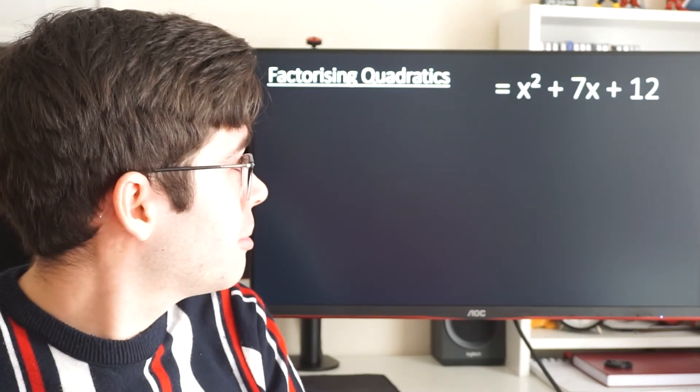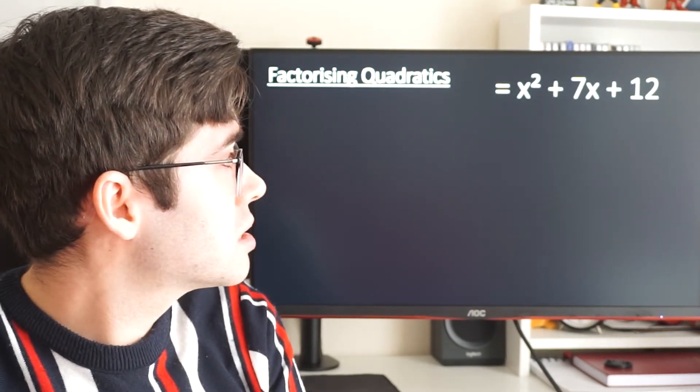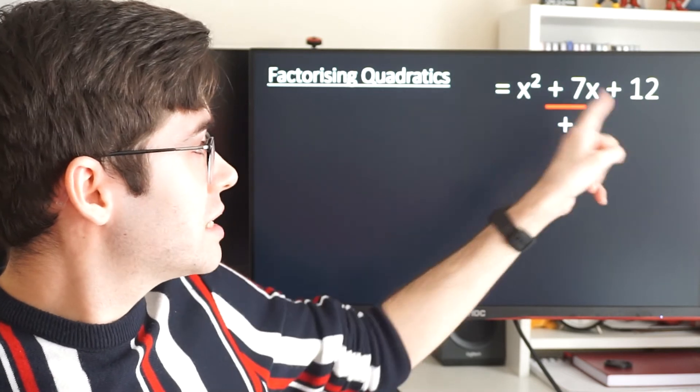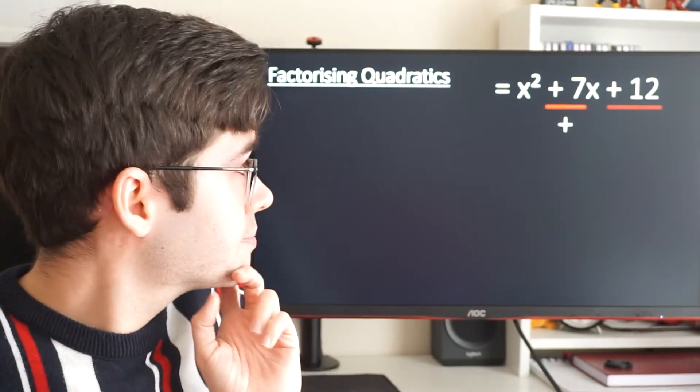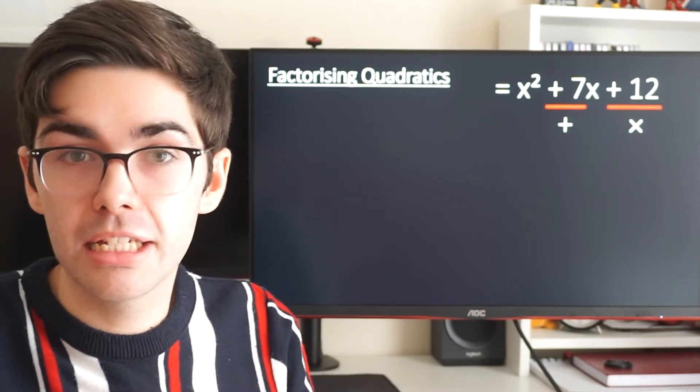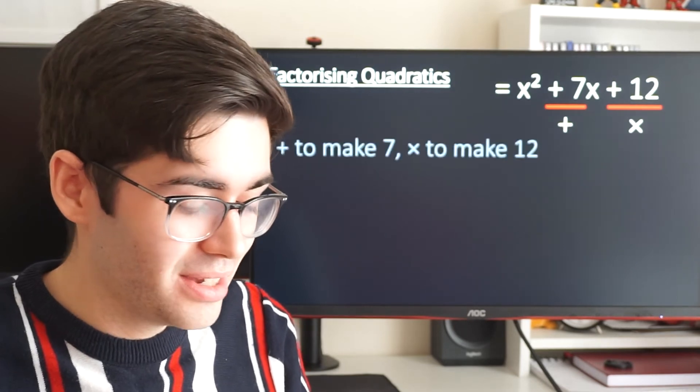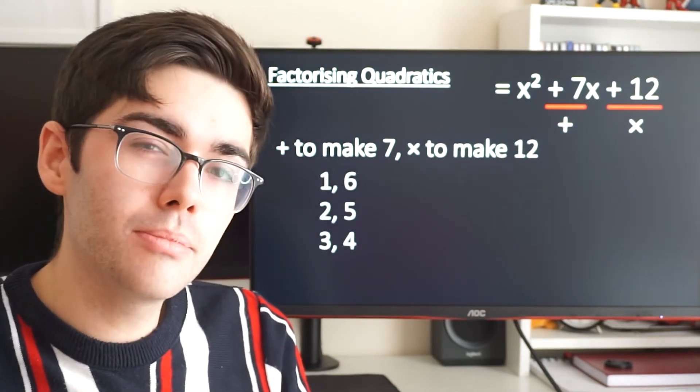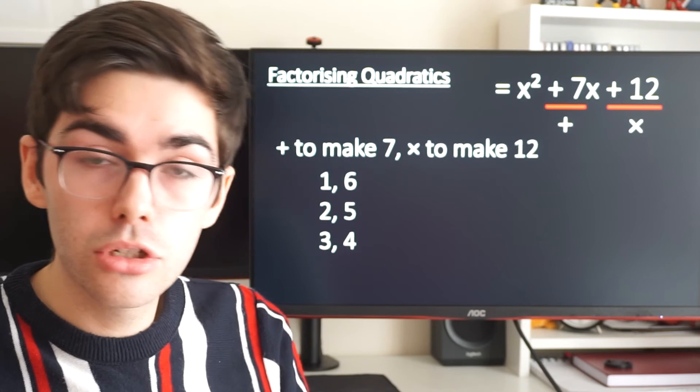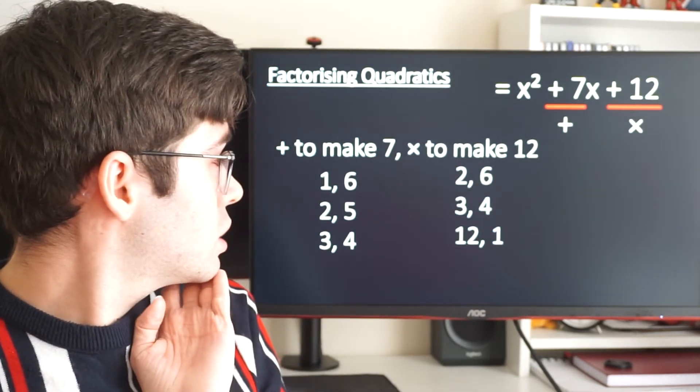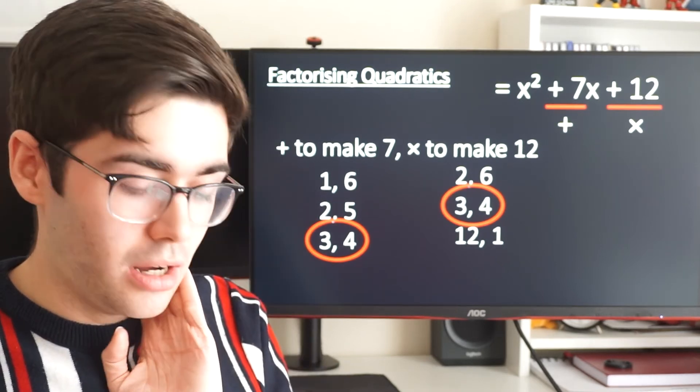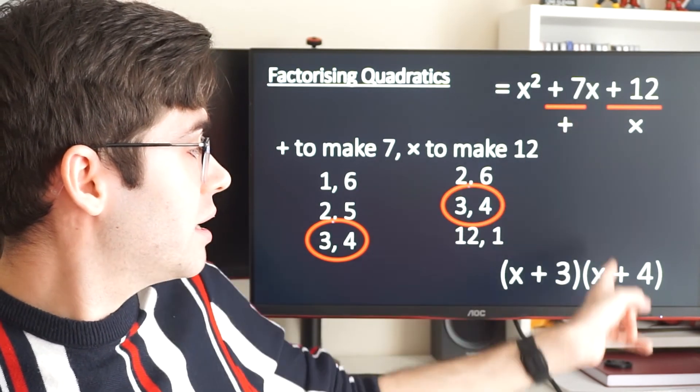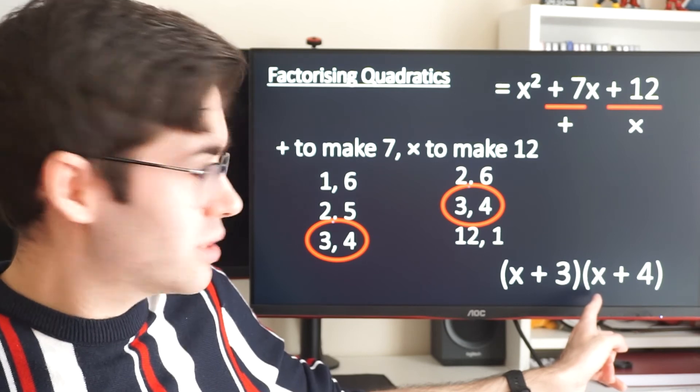Let's have a look at another example here. x squared plus 7x plus 12. Where did I say this 7 came from? Adding. Where did I say this 12 came from? Timesing. So I'm looking for two numbers that add to make 7 and that times to make 12. Have a think, see if you can work it out. So what adds to make 7? 1 and 6, 2 and 5, 3 and 4. What times is to make 12? 1 and 12, 2 and 6, 3 and 4. Which number do I see twice there? 3 and 4. So those are my answers. Again, they're both positive. So it's x plus 3, x plus 4. So that, factorized, is that.